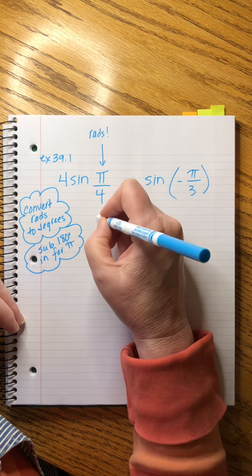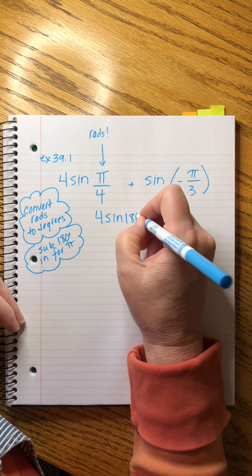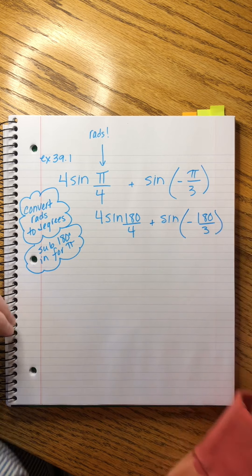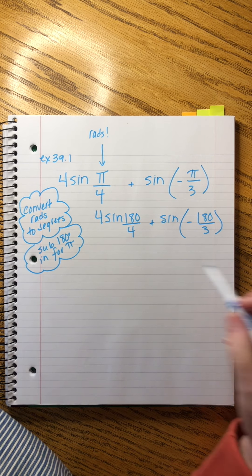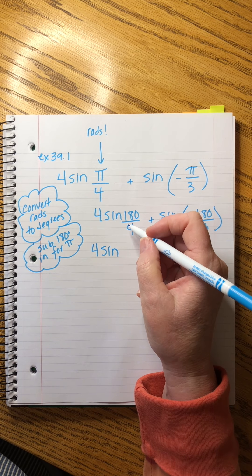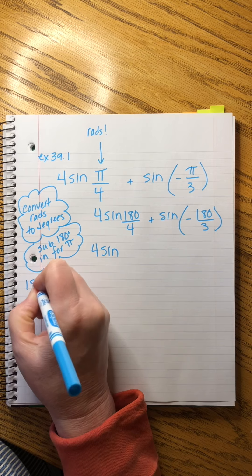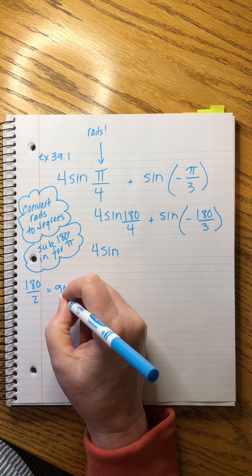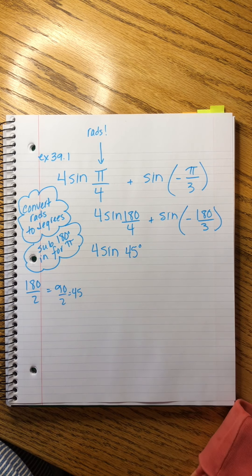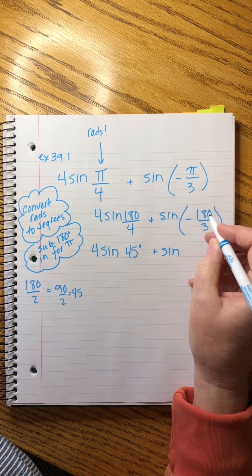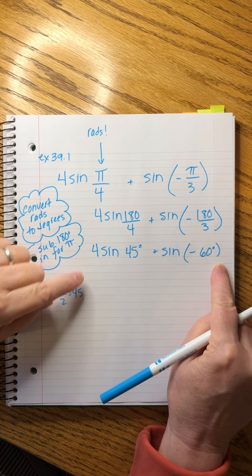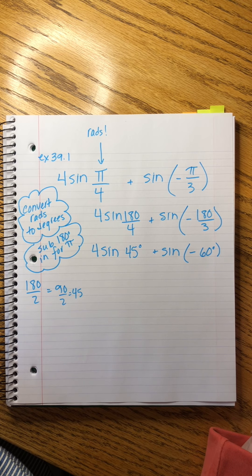Example 39.1: 4 times the sine of pi over 4, plus the sine of negative pi over 3. When you see pi in the angle, recognize those are radians, and we'll fix it. Substituting 180 in for pi gives us 4 times the sine of 180 over 4, plus the sine of negative 180 over 3. Simplifying: 180 divided by 4 is 45 degrees, and 180 divided by 3 is 60, so it becomes 4 times sine of 45 degrees plus sine of negative 60 degrees. Now we recognize familiar angles — so much better.